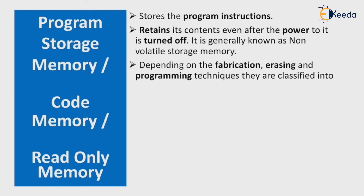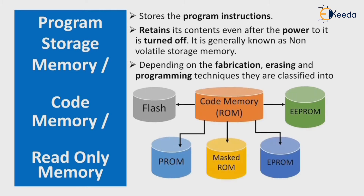Depending on the fabrication, erasing, and programming techniques, ROM is classified into broad categories: Flash memory, PROM (Programmable Read-Only Memory), MROM (Masked ROM), EPROM (Erasable Programmable Read-Only Memory), and EEPROM (Electrically Erasable Programmable Read-Only Memory).